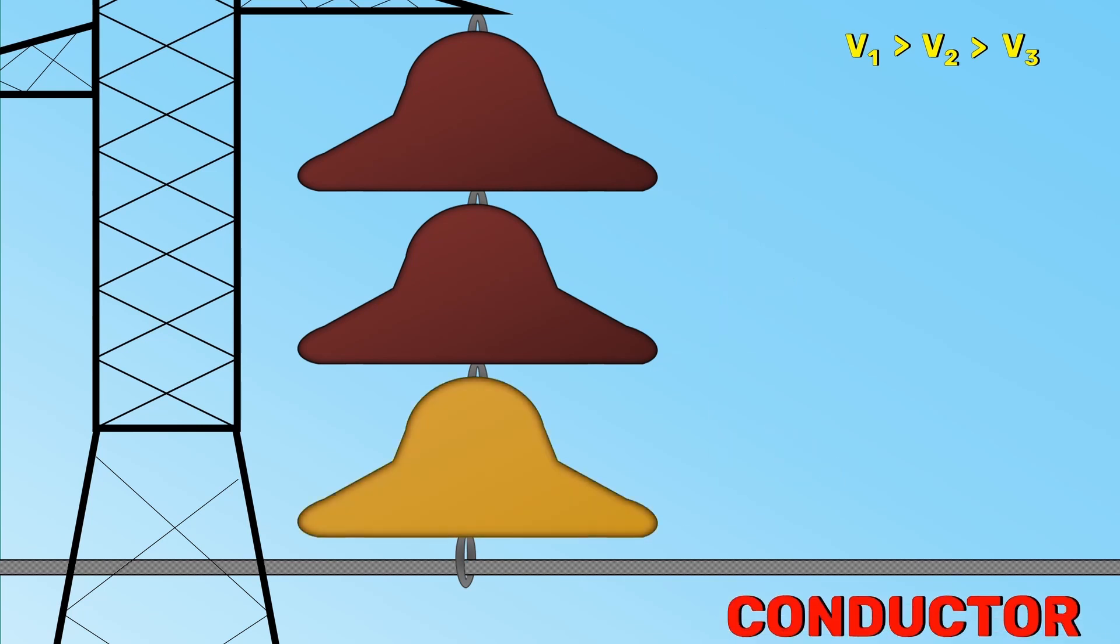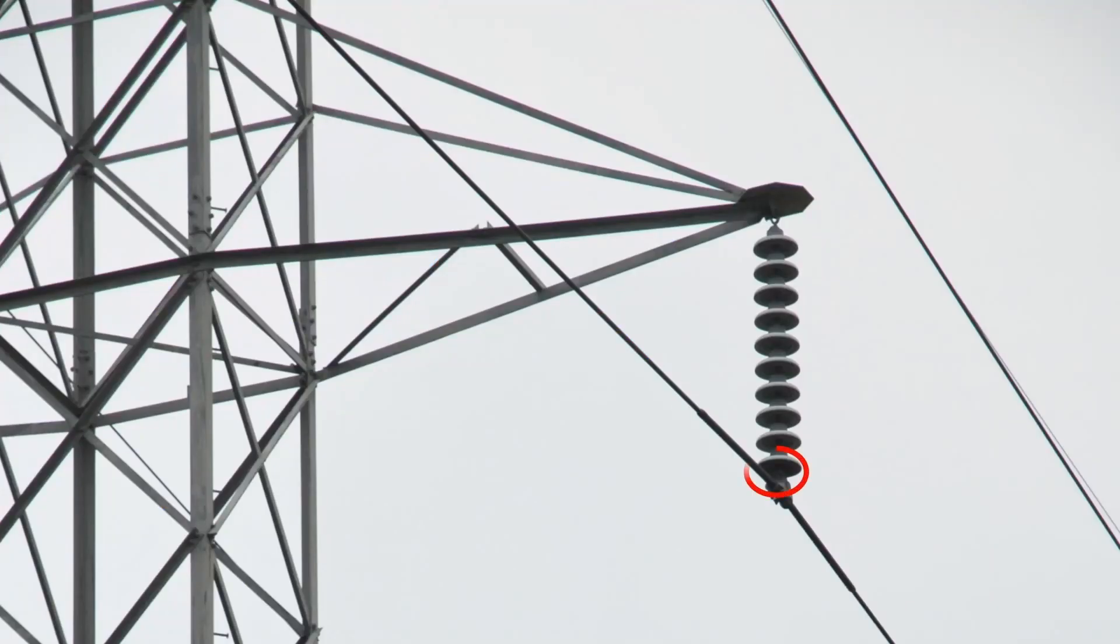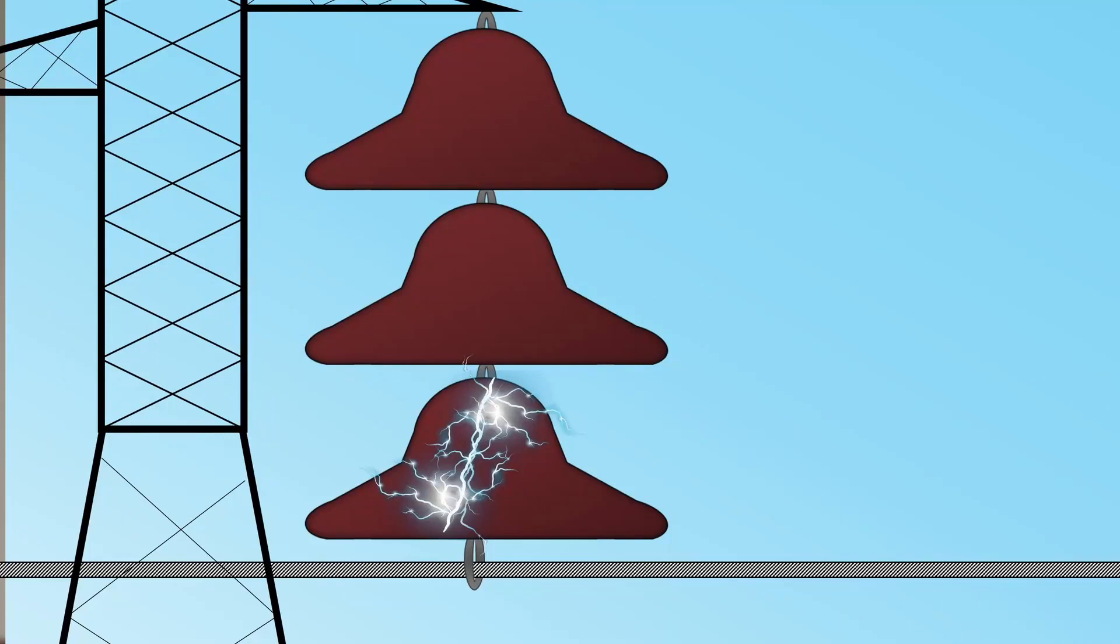The disc nearest to the conductor has the maximum voltage across it. As we move towards the cross arm, the voltage across each disc goes on decreasing. Therefore, the unit nearest to the conductor is under maximum electrical stress and is likely to be punctured.